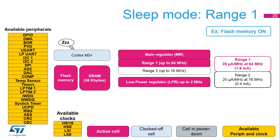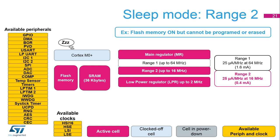In sleep mode, the CPU clocks are off. In range 1, the system clock is up to 64 MHz; in range 2, it is up to 16 MHz. By default, the SRAM clock is enabled and can be gated off during sleep mode by software. All peripherals can be activated in range 1. The sleep mode consumption is 25 microamps per MHz in range 1 at 64 MHz with flash memory on. In range 2, all peripherals can be activated, but flash memory cannot be programmed or erased. The sleep mode consumption is 25 microamps per MHz in range 2 at 16 MHz with flash memory on.